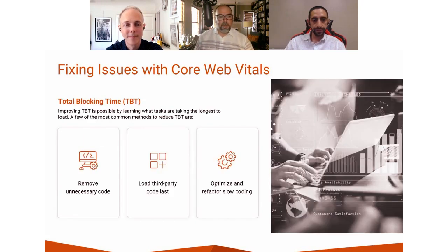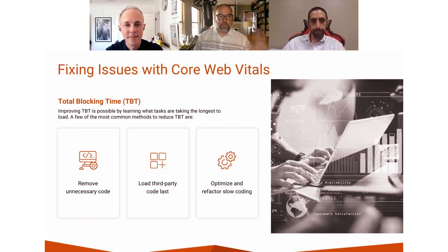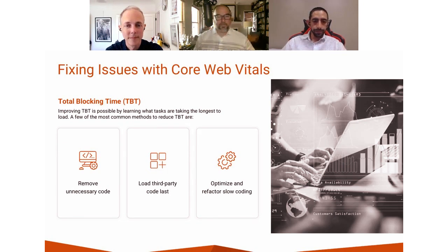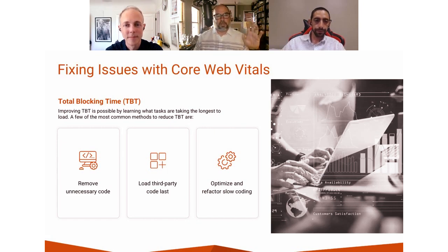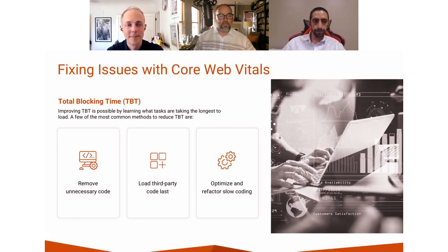Total Blocking Time — we can shoot through this one pretty quickly. It's a lot of the greatest hits from the other items. Remove unnecessary code, load that third-party code as quickly as possible, and optimize and refactor all that slow coding. As you can see, as you start working through these things, one fix will help another and another — it all comes together. Attacking all of these things at once will usually improve things across the board. There's most likely a lot of low-hanging fruit that won't necessarily take up a bunch of time for your developers.